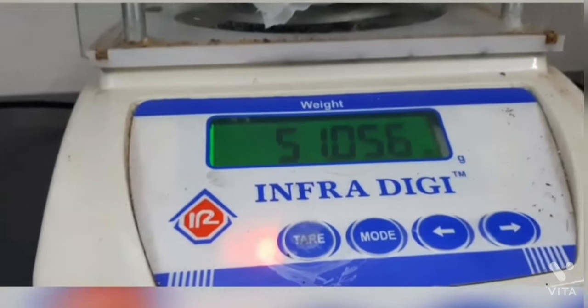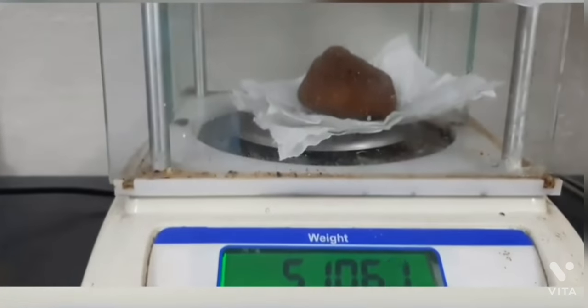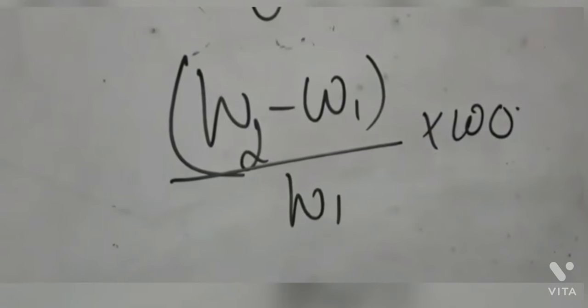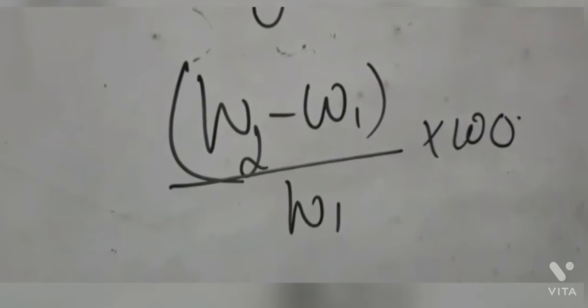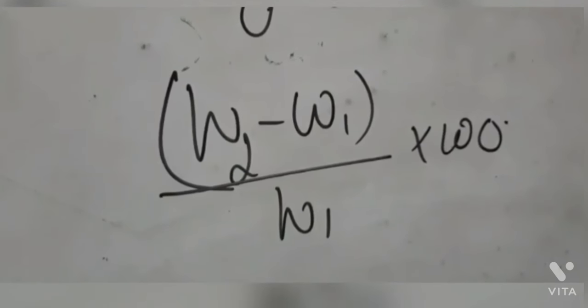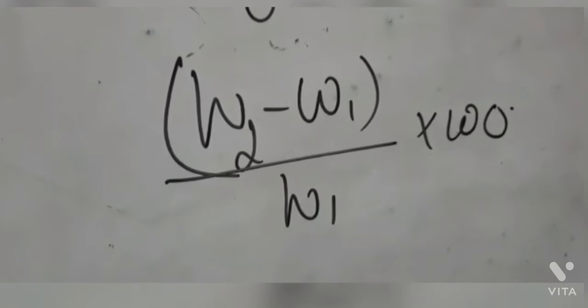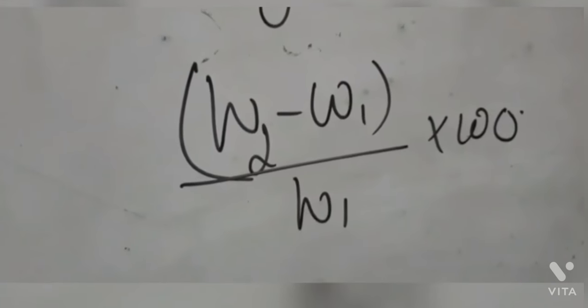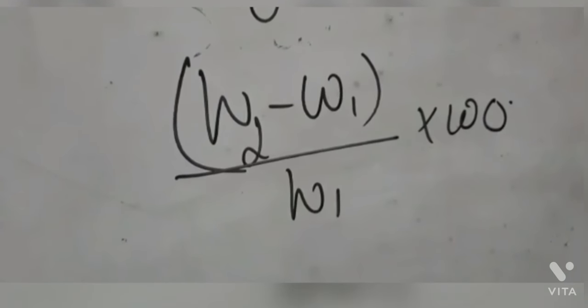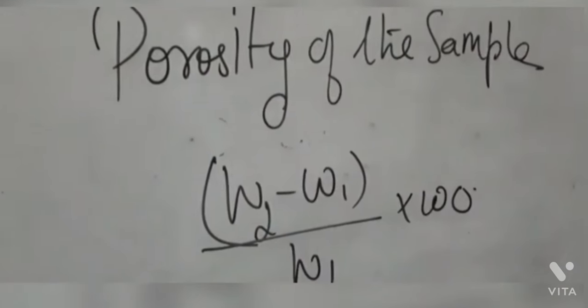The difference is 2 grams. W2 minus W1 divided by W1 multiplied by 100 gives the percentage of porosity. So 2 divided by 49.1 multiplied by 100 equals approximately 4%. So 4% is the porosity of our sample. Hope you understood — see you in the next video, thank you.